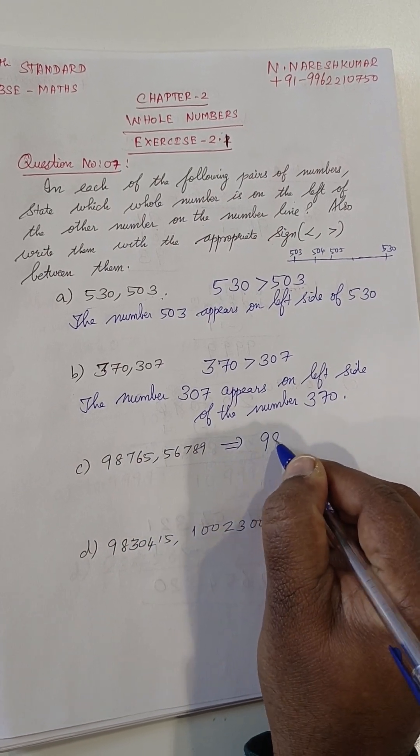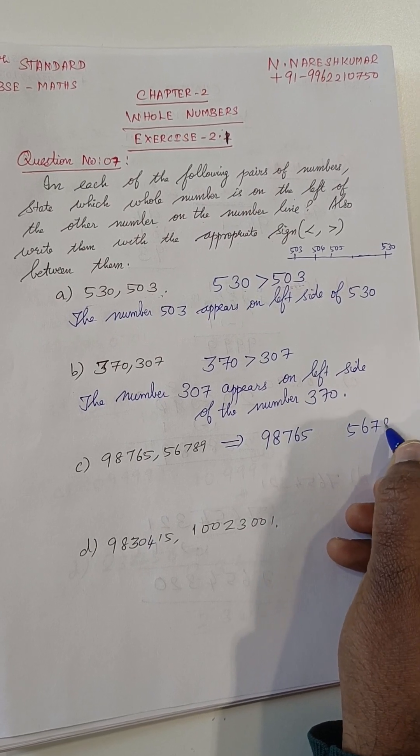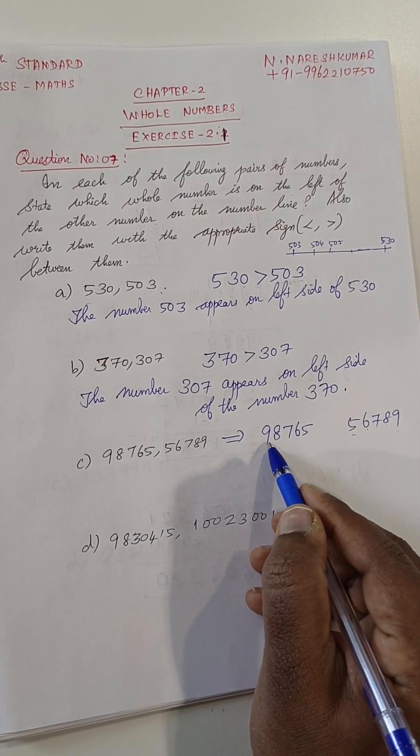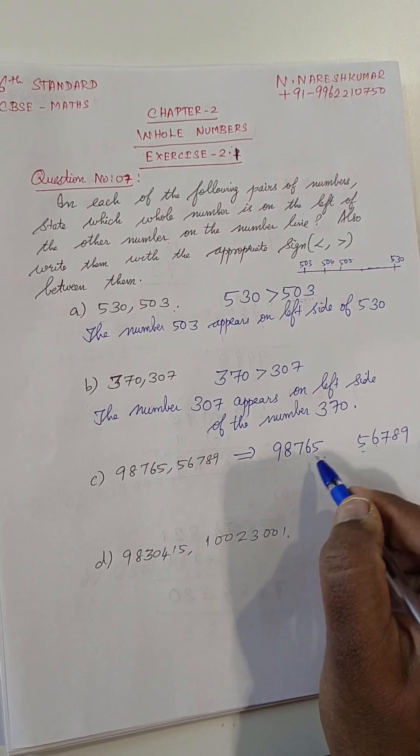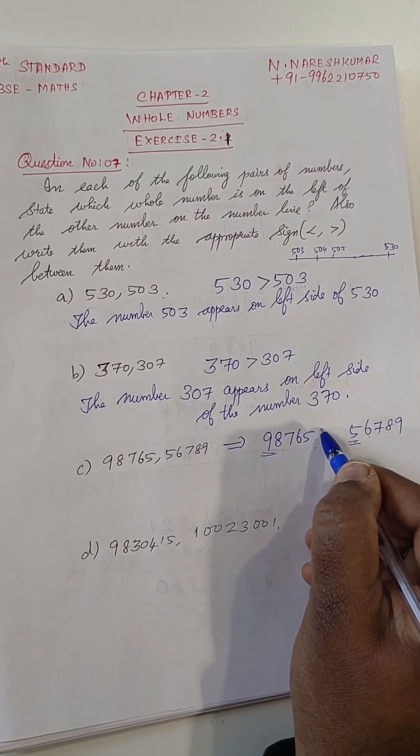98765, 56789. 1, 2, 3, 4, 5 digit numbers are there. Here also, 5 digit numbers are there. So, while comparing these, which one is greater? This one is the greatest number.